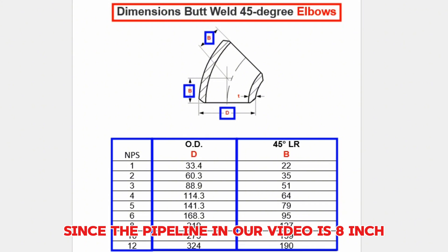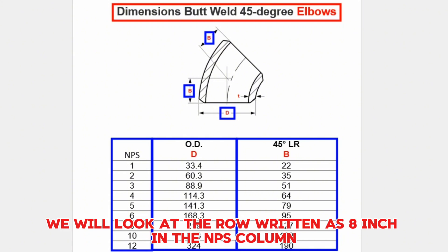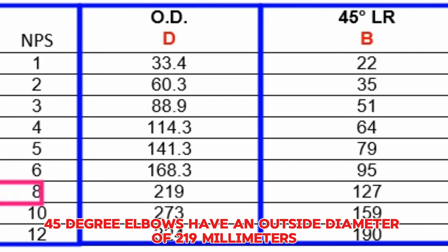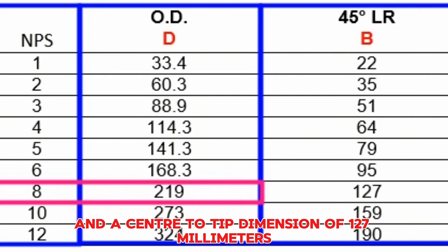Since the pipeline in our video is 8-inch, we will look at the row written as 8-inch in the NPS column. This table shows that 8-inch butt welded 45-degree elbows have an outside diameter of 219 millimeters and a center-to-end dimension of 127 millimeters.